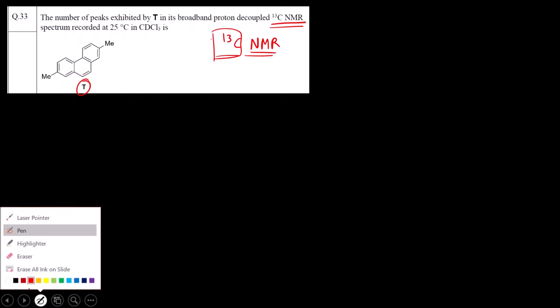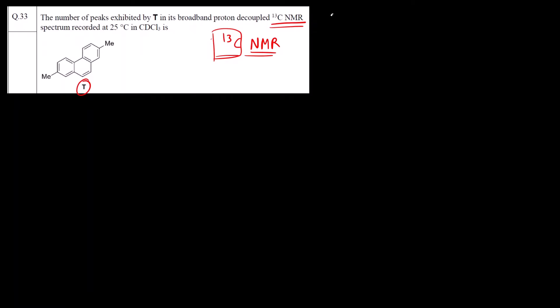How do you exactly count the number of signals? The groups that reflect after placing the mirror plane, after adding or drawing the plane of symmetry, those groups which reflect each other across the mirror plane, they are in the same chemical environment. Those groups are present in the same chemical environment and they will give a same signal. They give same signal.